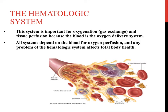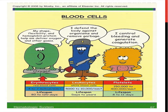The hematologic system contains the red blood cells. Red blood cells are important because they carry oxygen to all the tissues of the body. Without sufficient red blood cells circulating in the body, some tissues will not have adequate oxygen, causing a problem in total body health. We'll discuss what those signs and symptoms look like.